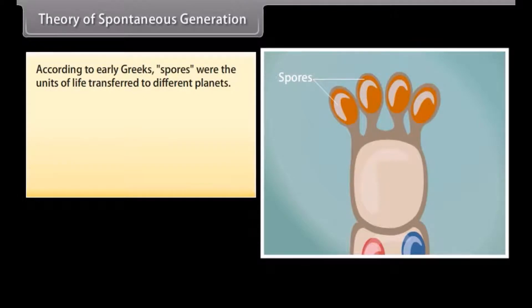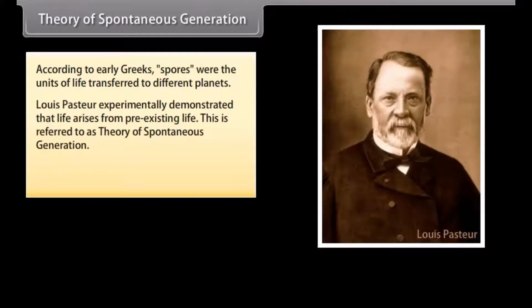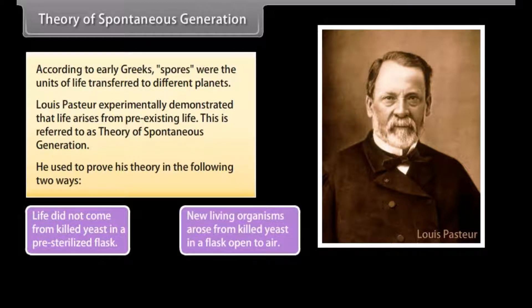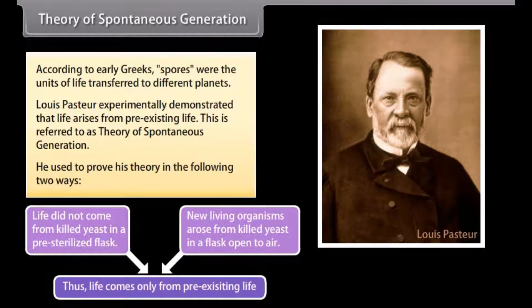Theory of spontaneous generation. According to early Greeks, spores were the units of life transferred to different planets. Louis Pasteur experimentally demonstrated that life arises from pre-existing life. This is referred to as Theory of spontaneous generation. He used to prove his theory in the following two ways: Life did not come from killed yeast in a pre-sterilized flask. New living organisms arose from killed yeast in a flask open to air. Thus, life comes only from pre-existing life.